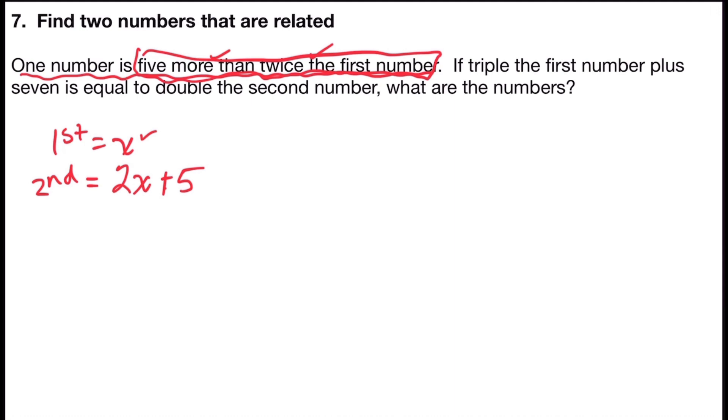Now I'm going to use translation to write my equation. It says if triple the first number plus seven is equal to double the second number, what are the numbers?